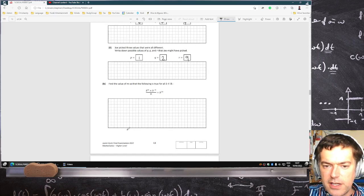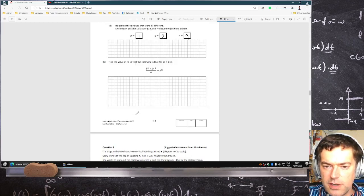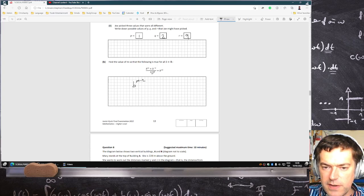Okay. Find the value of M so that the following is true for all B. Okay. So that's B power 1 here. So when you multiply, you add the powers. And then when you divide, you subtract the power.